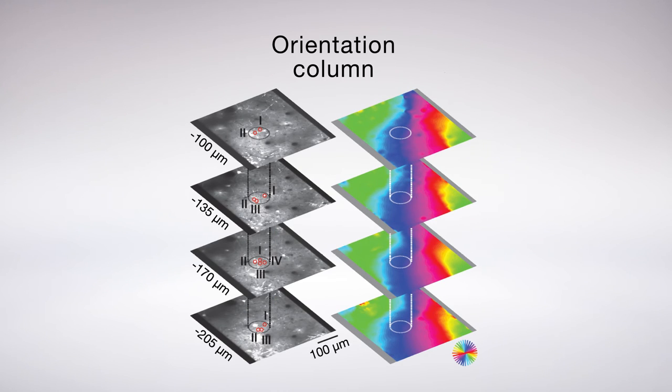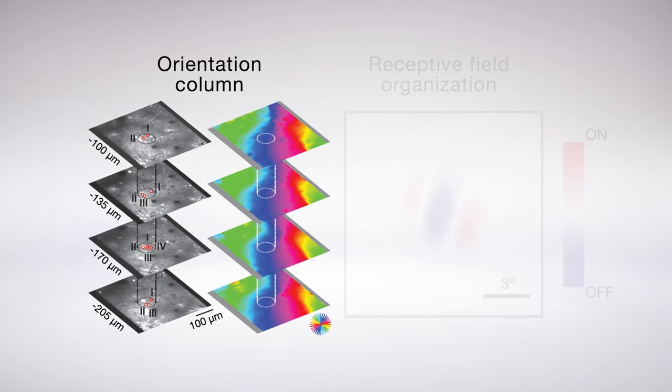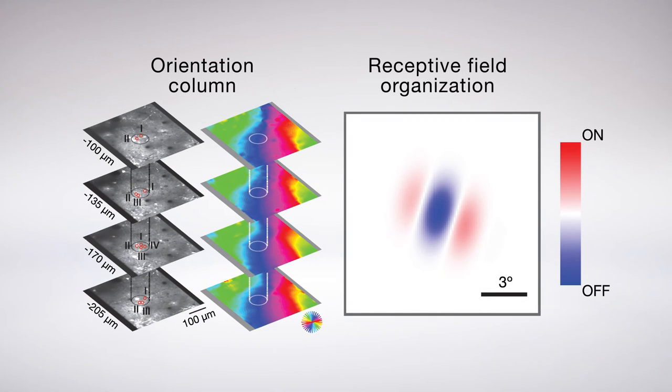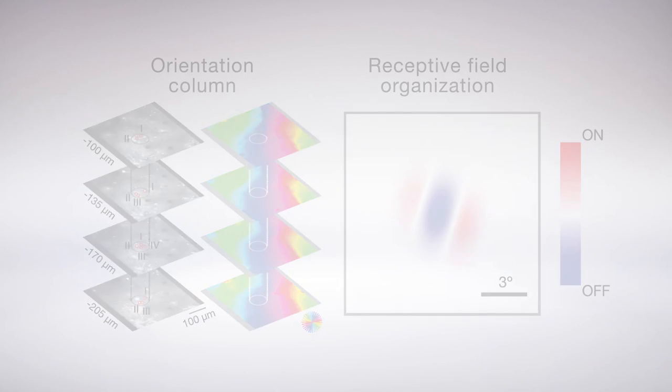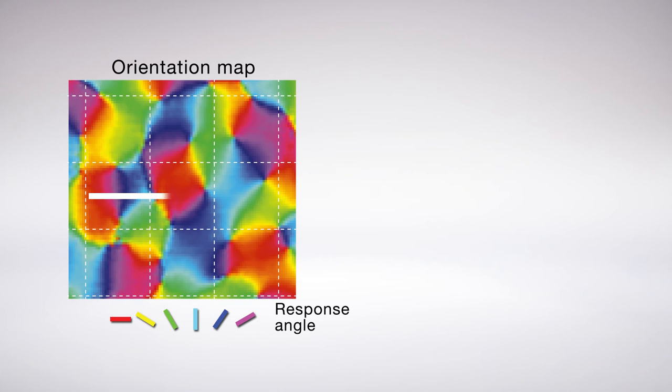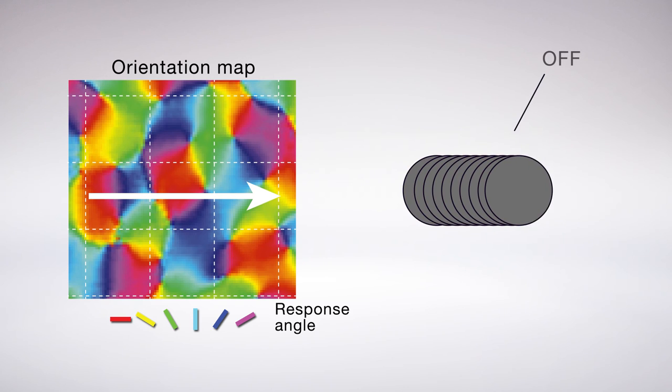The fact that the on responses surround the off responses is also key. Every column of cells has this same organization. As a result, if you sample columns of neurons in a straight line along the cortical surface, the region of visual space captured by the off responses also moves in a line.